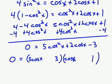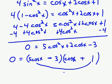If I make this a plus and this a minus, when I multiply out the outer terms, I'll get 5 cosine x. When I multiply out the inner terms, I'll get minus 3 cosine x. Those do combine together to make 2 cosine x as needed.